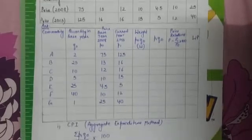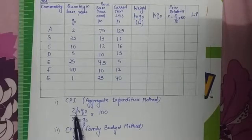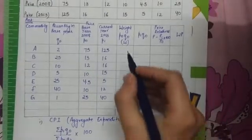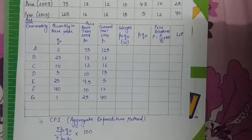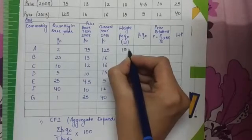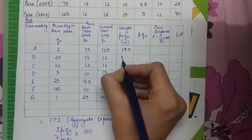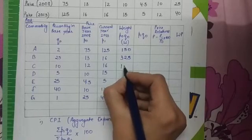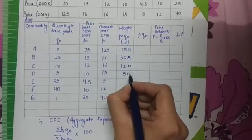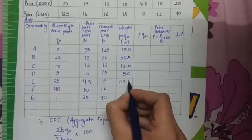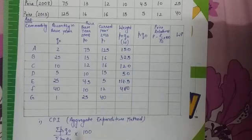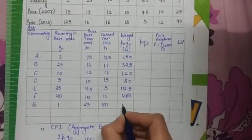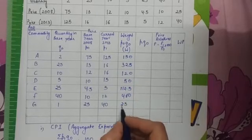I have tabulated commodities A through G in a vertical column. The base year quantity q0 values are 2, 25, 10, 5, 25, 40. The base year prices p0 are 75, 13, 12, 10, 4.5, 10, 25. The current year prices p1 for 2013 are 125, 16, 16, 15, 5, 12, and 40. For the Aggregate Expenditure Method I need the totals of p1q0 and p0q0 multiplied together.